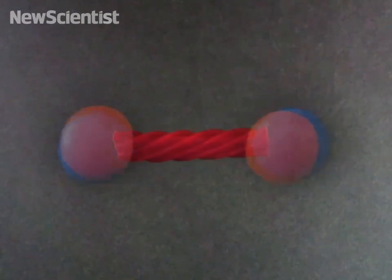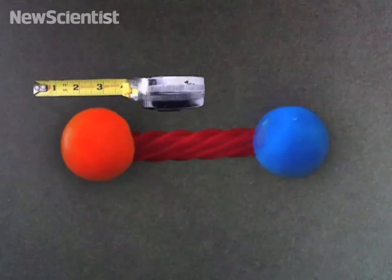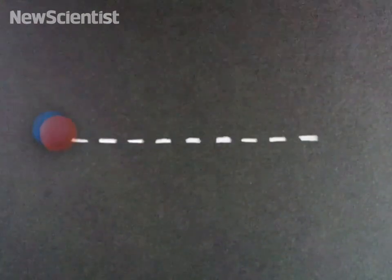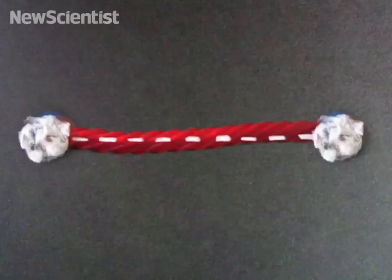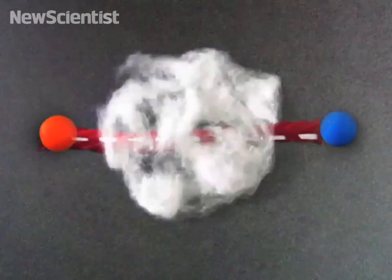And particles can be entangled so that what happens to one affects the other. This even works across a distance instantaneously, faster even than the speed of light. It's as if the distance didn't exist.